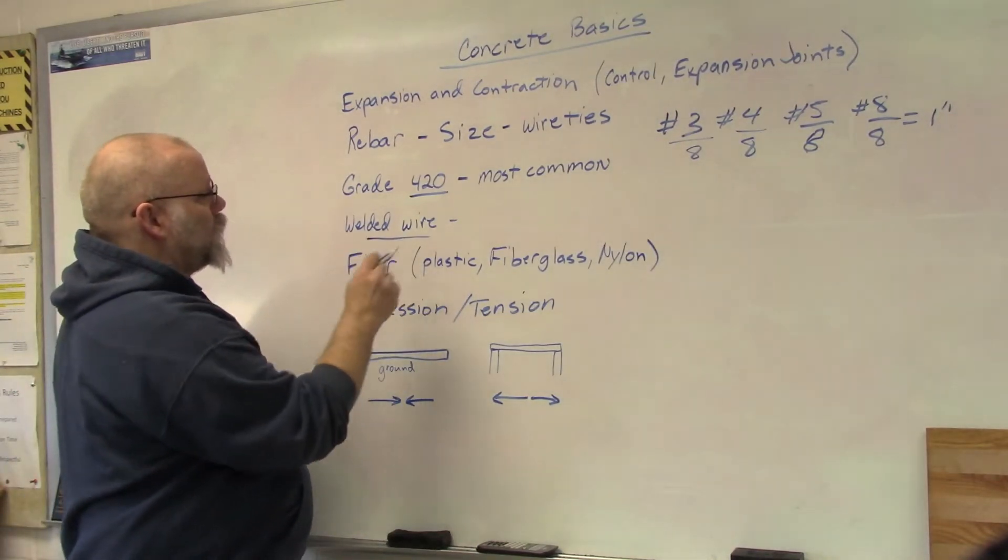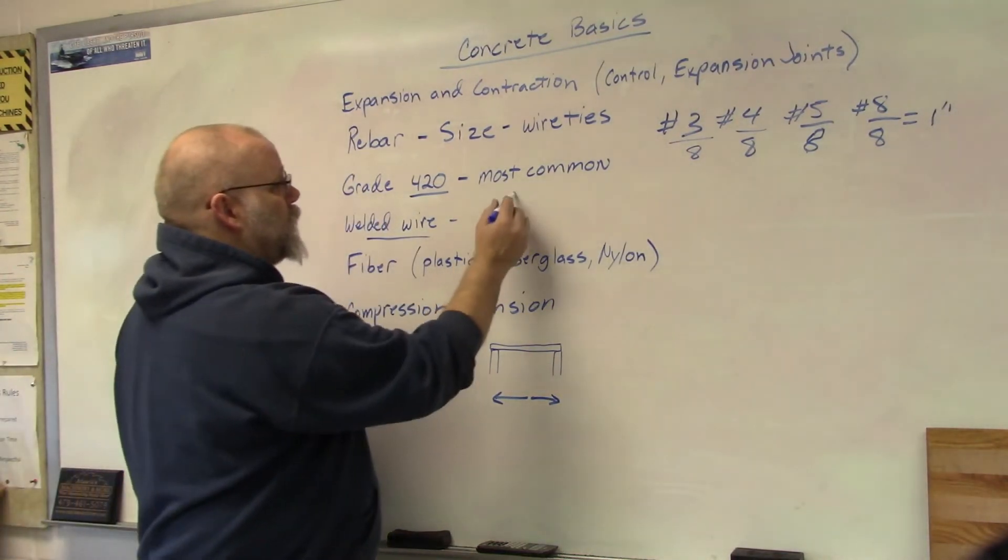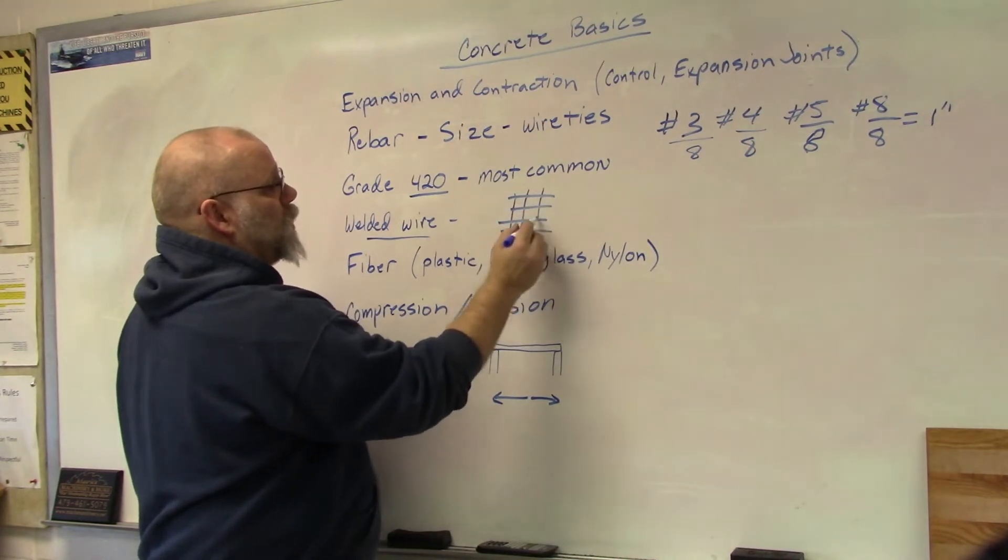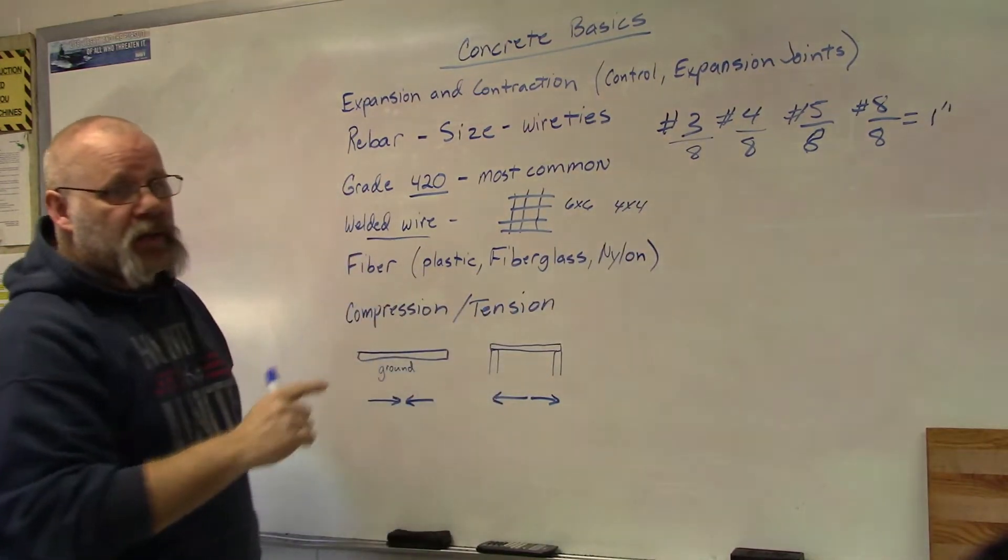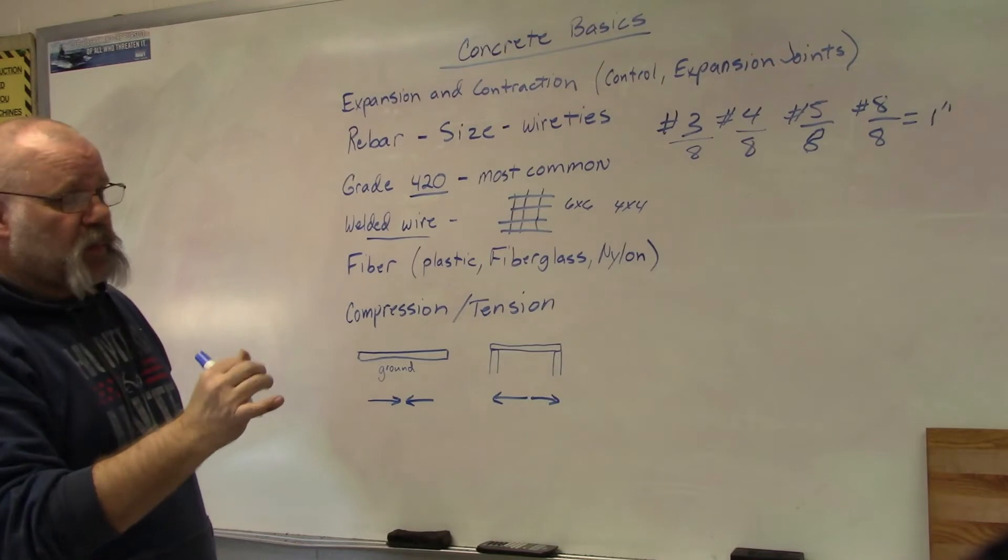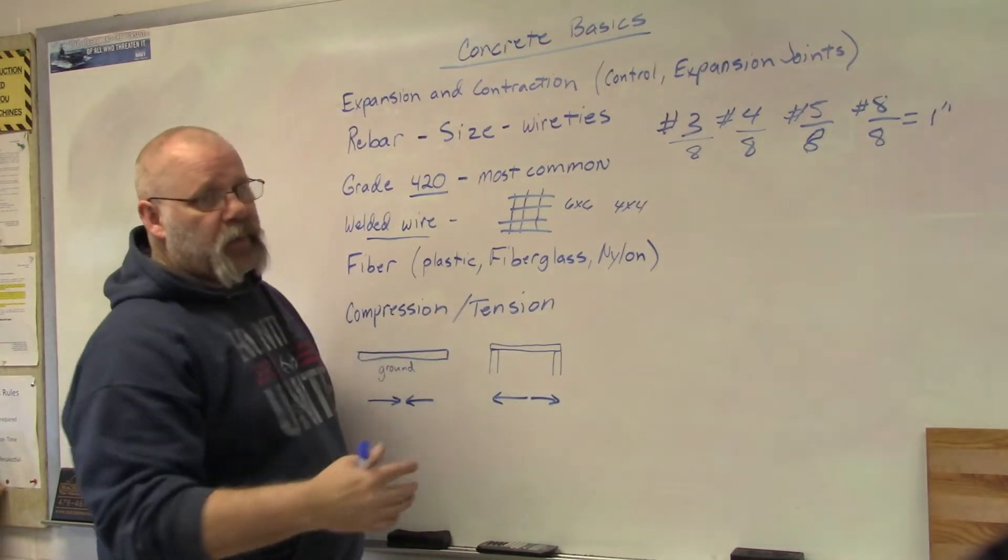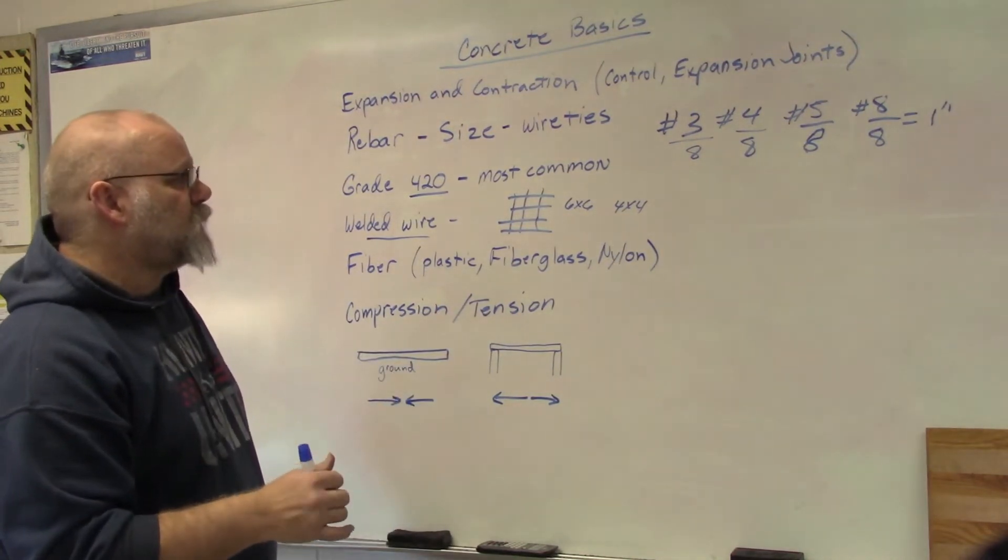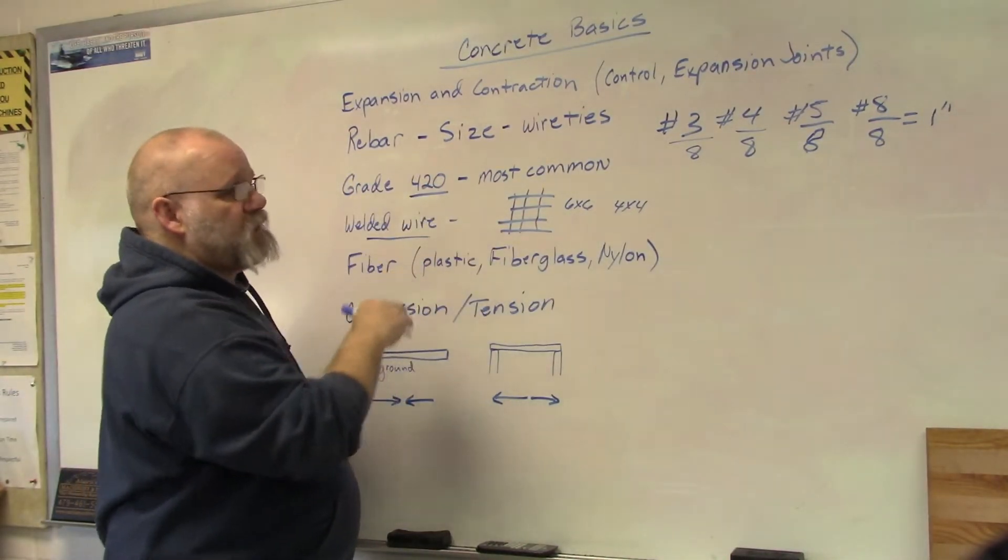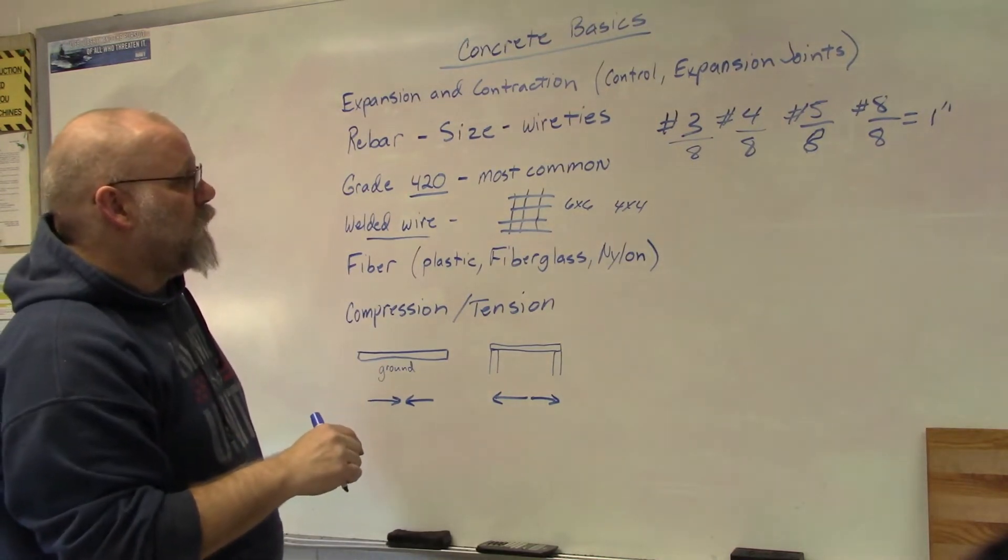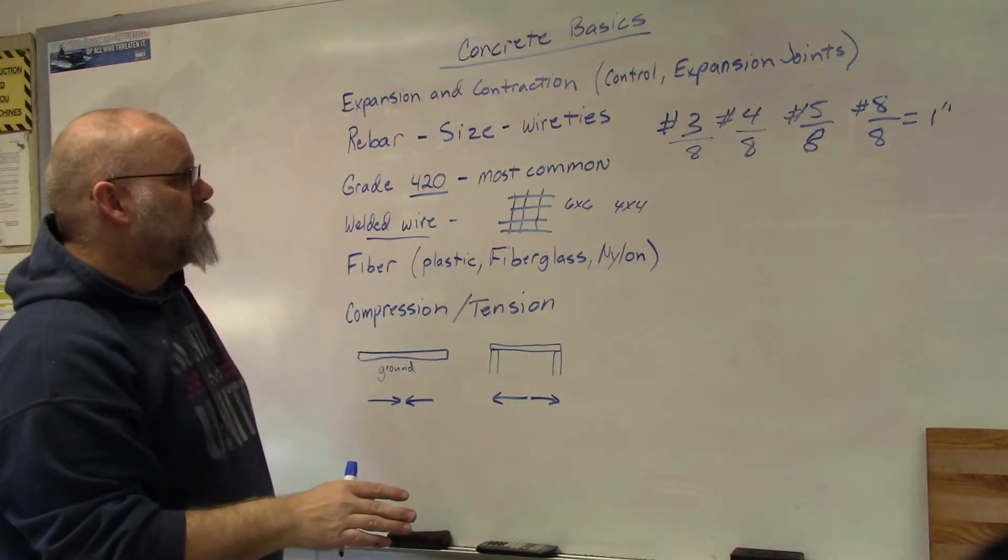The next thing we're going to talk about is welded wire. Welded wire can be used in place of rebar. Welded wire comes in squares. The two most common are six by six or four by four, and the wire gauges vary. Again, you can go from a small gauge wire to a very large gauge wire. You can buy them in rolls or you can buy them in panels if you go with the thicker stuff. This can be replaced like this. Again, you want your welded wire to be steel so that it has the same expansion and contraction as the concrete that you're placing.